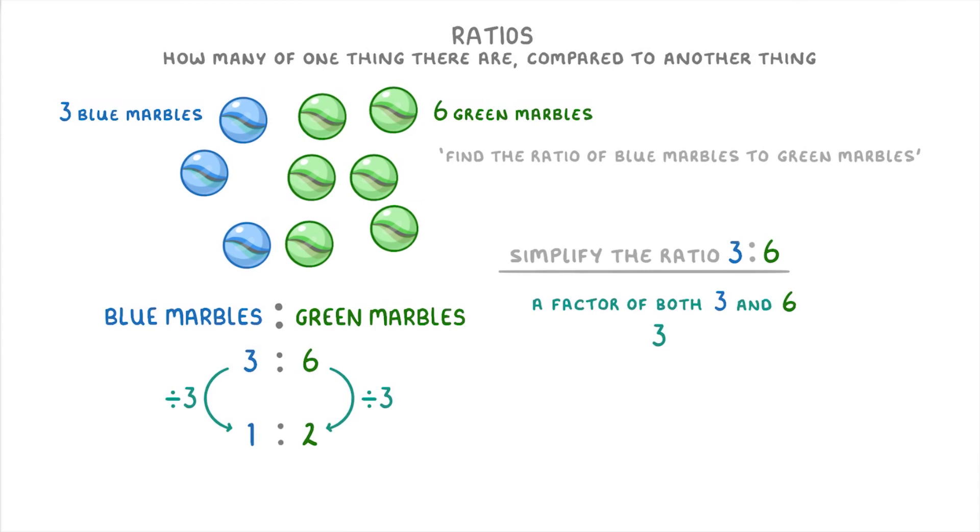And importantly, the ratio 3 to 6 means exactly the same thing as 1 to 2. We haven't changed its value at all. We've only simplified it. And all the ratio really means is that for every one blue marble, there are going to be two green marbles.